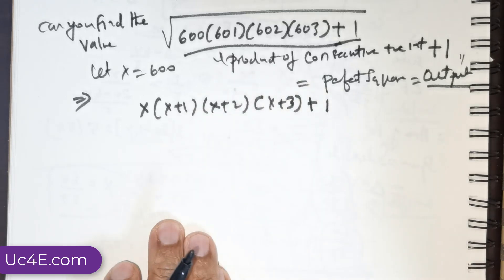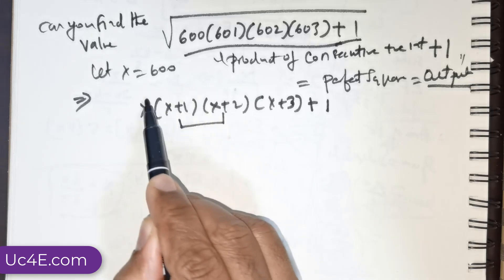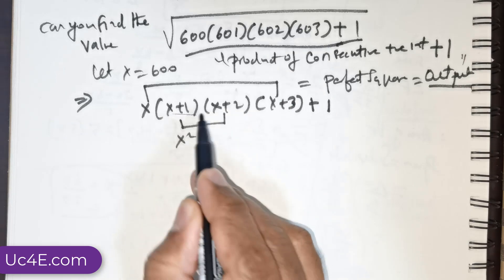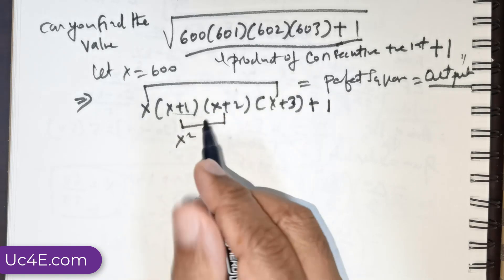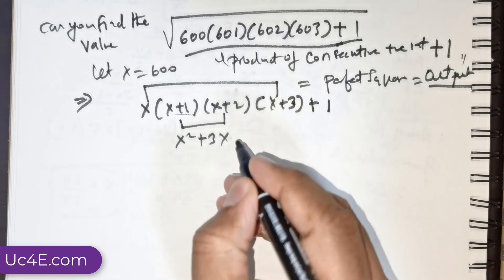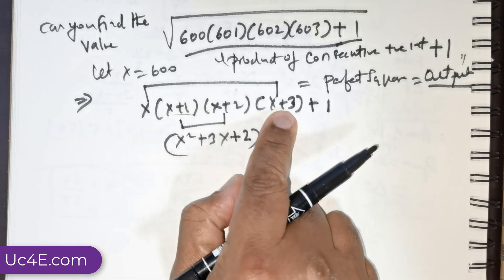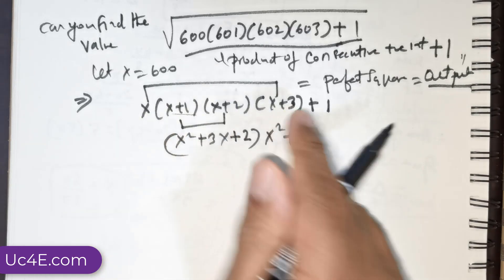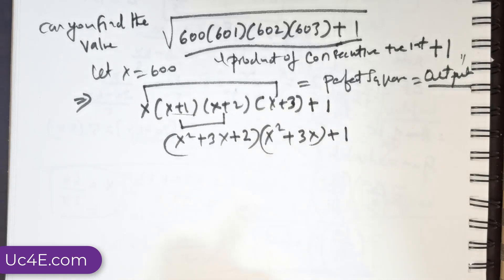Now I'd like to club these pairs together: x with (x+3), and (x+1) with (x+2). Multiplying x(x+3) gives x² + 3x, and multiplying (x+1)(x+2) gives x² + 3x + 2.